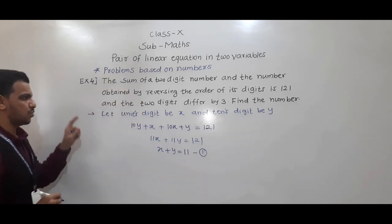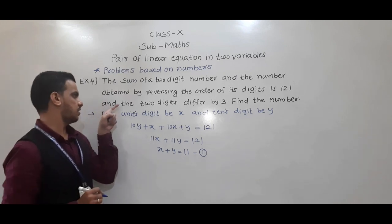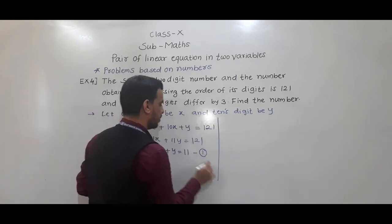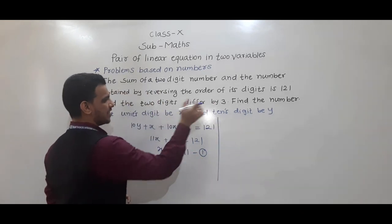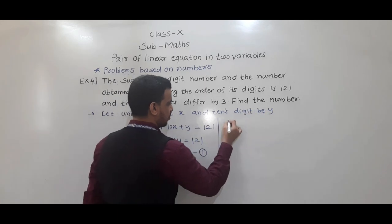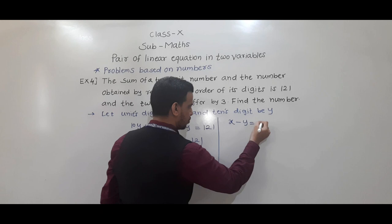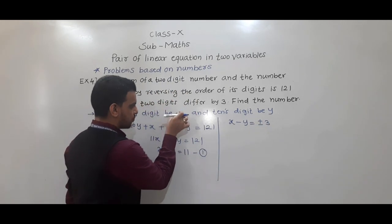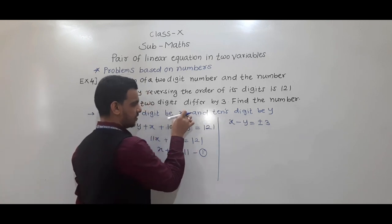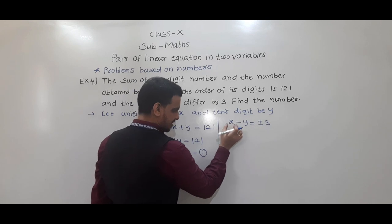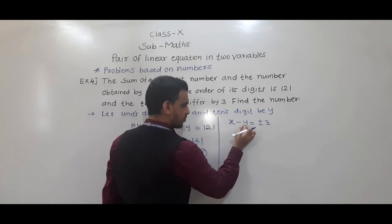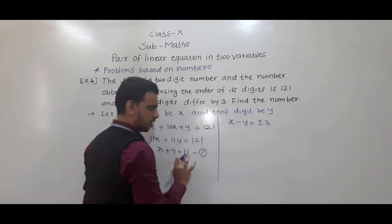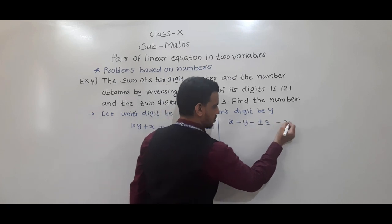For the second equation: the two digits differ by 3. We don't know which digit is greater — either x is greater or y is greater. So we take x minus y equals plus or minus 3. If x is greater, x minus y equals plus 3. If y is greater, x minus y equals minus 3. We must solve both cases.